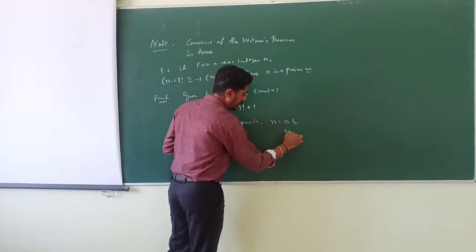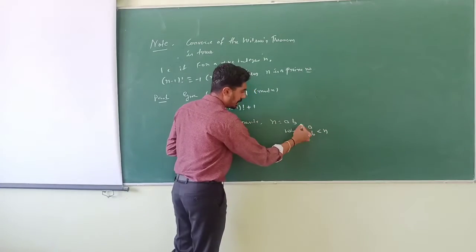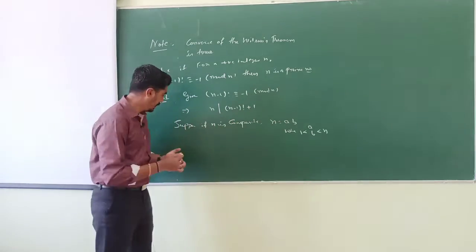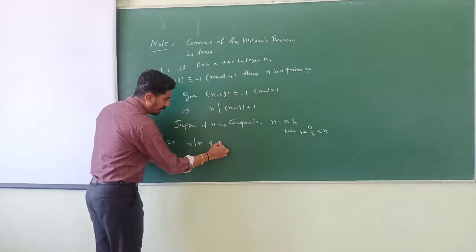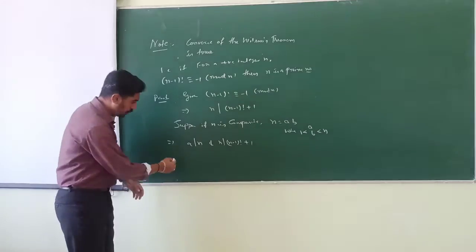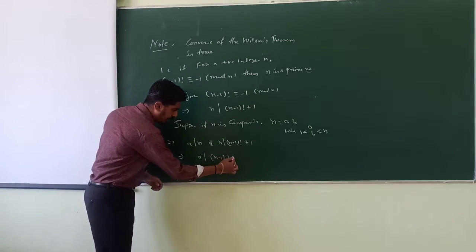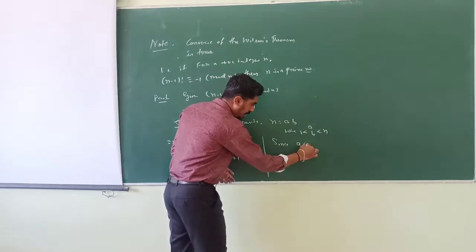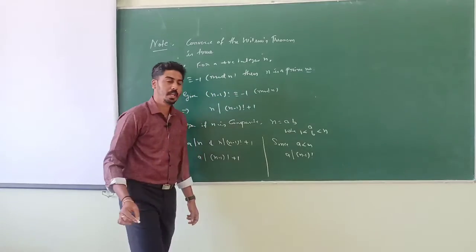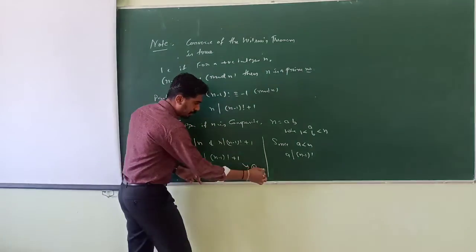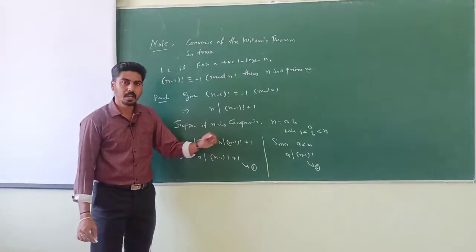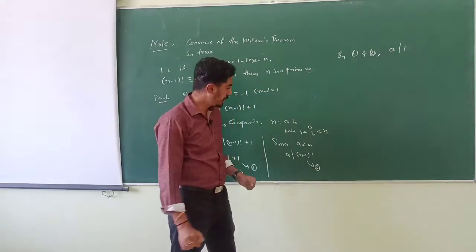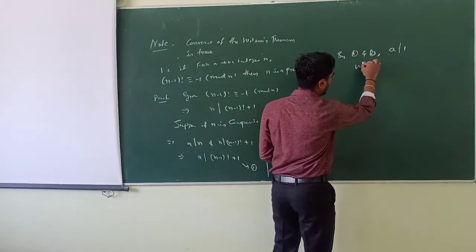Then n can be written as a · b, where a and b are strictly less than n and strictly greater than 1. So a divides n. We have that n divides (n minus 1)! plus 1, so a divides (n minus 1)! plus 1. But since a is less than n, a should also divide (n minus 1)!. Combining these two results, a divides 1, which is a contradiction since a is greater than 1.